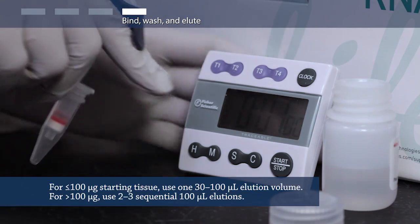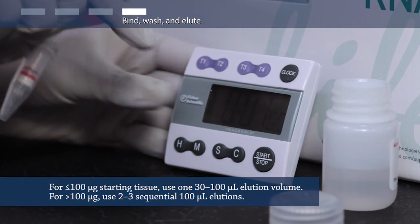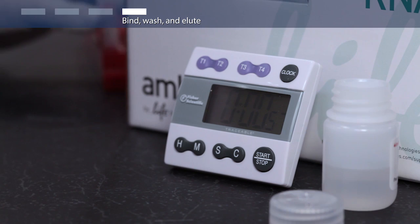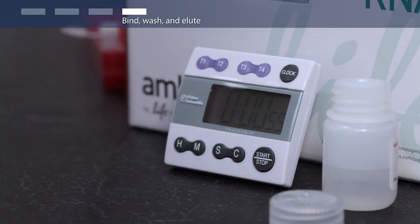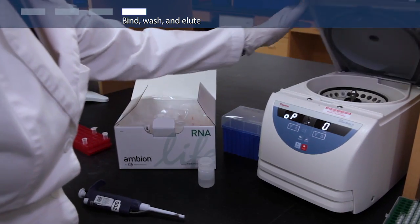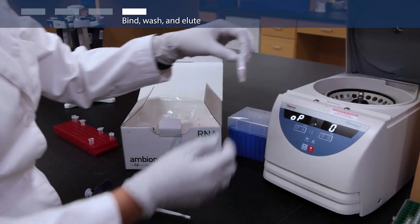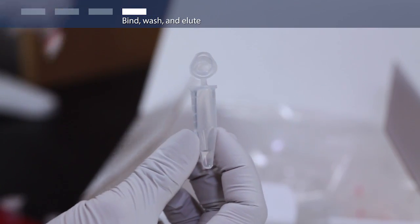Then add the appropriate volume of elution buffer based on your starting amount. Incubate at room temperature for 1 minute. Next, centrifuge the column inserted into a recovery tube at 12,000 g for 2 minutes. Your ultra-pure RNA is in the recovery tube,